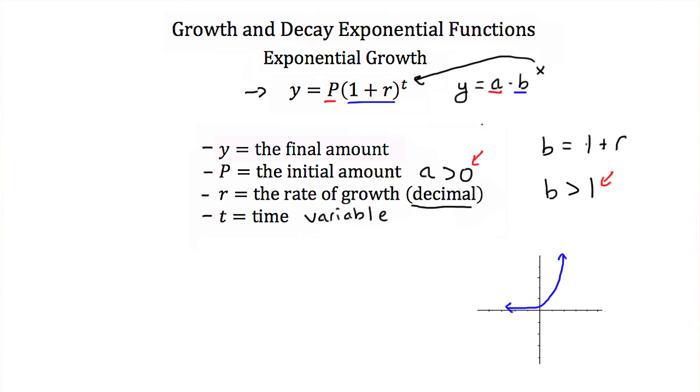Now our x-axis is actually our t-axis, and our y-axis is the amount that we're looking for. So that means as time goes by with an exponential growth problem, the amount of what we're looking for or our final amount is going to increase.